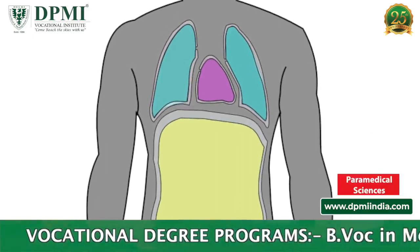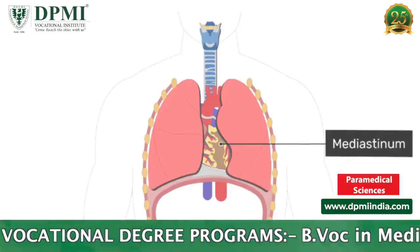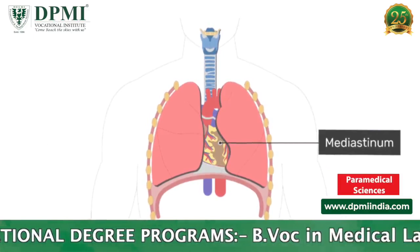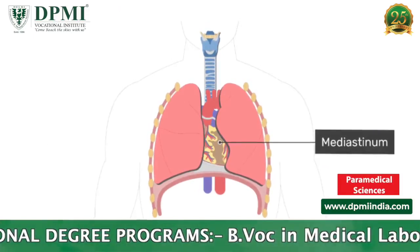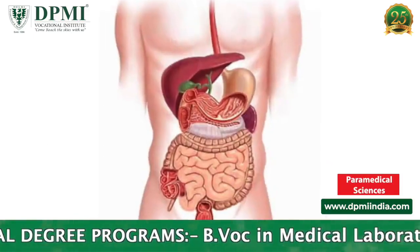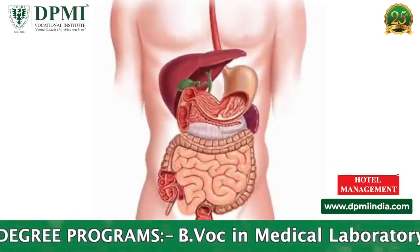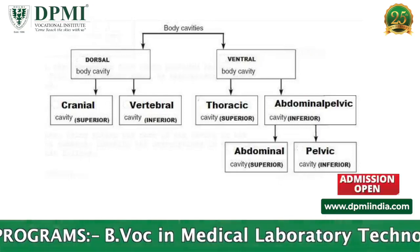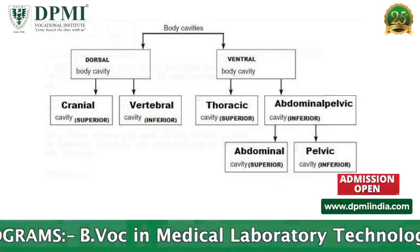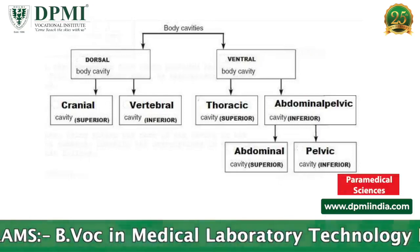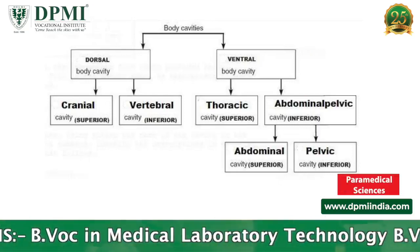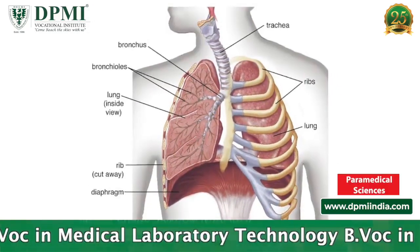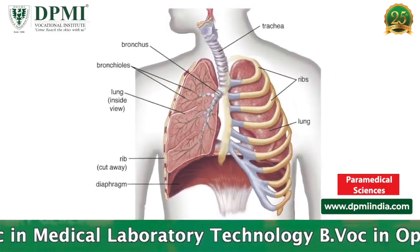The ventral cavity is at the anterior or front of the trunk. Organs present within this body cavity include the lungs, heart, stomach, intestines, and reproductive organs. The ventral cavity is subdivided into the thoracic cavity and the abdominal-pelvic cavity.